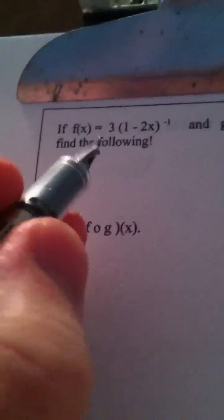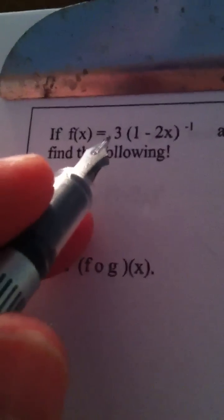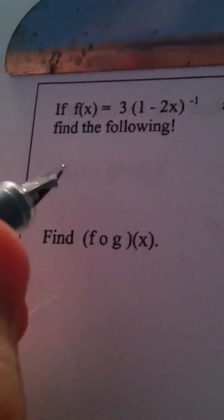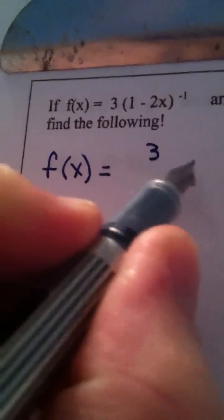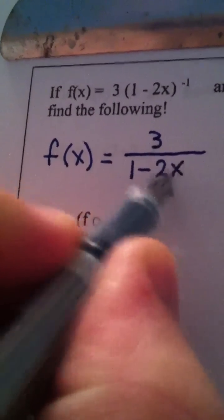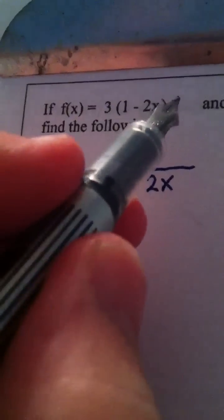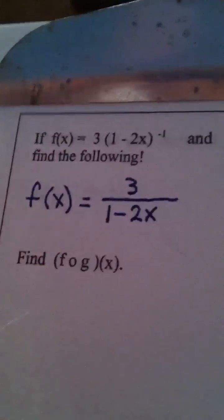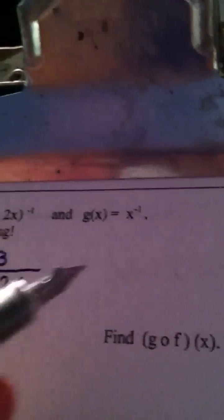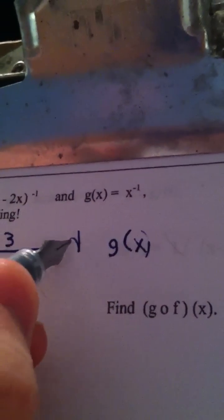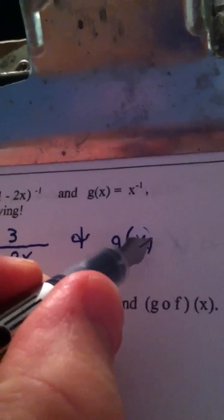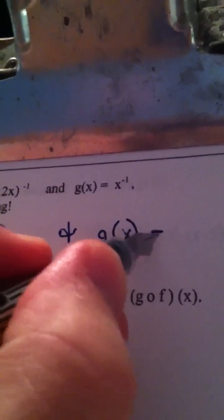Okay, ladies and gentlemen, the first function we have here, 3 times 1 minus 2x to the negative first power, that's really the function f of x equals 3 over 1 minus 2x. Because if you recall, raising a quantity to the negative first power places it in the denominator, it takes the reciprocal of it. And g of x is x to the negative 1, so a better way to write that is g of x equals 1 over x. So the first thing I did here was rewrote our functions without negative exponents.